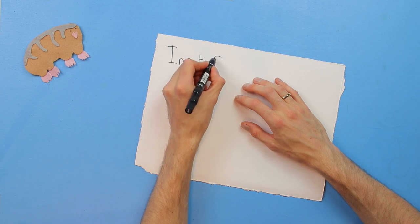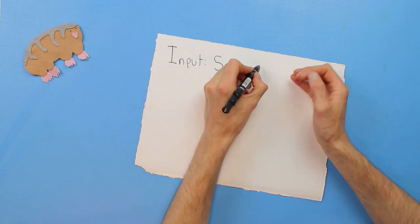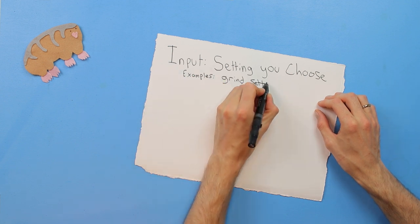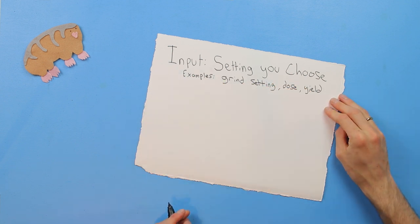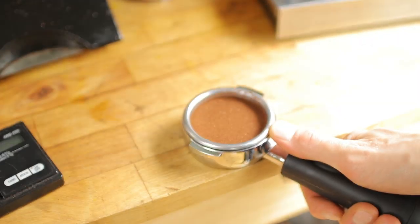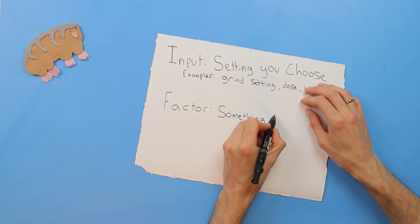First I will define how I like to use the terms input and factor. To make better espresso, you have to control each of its inputs. And by inputs, I mean the settings you choose, like grind setting or espresso dose. Each of these inputs affects important factors about espresso.